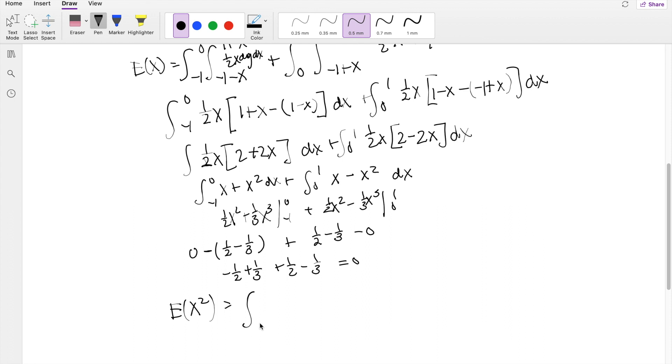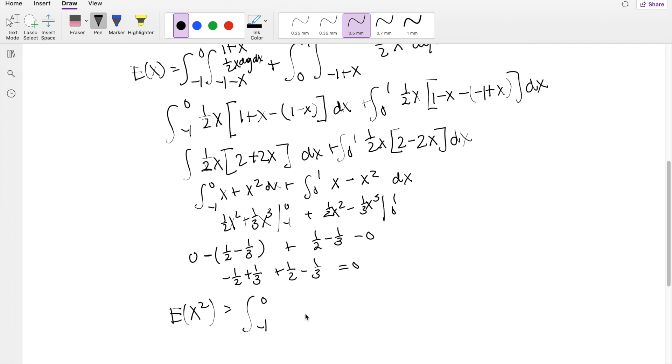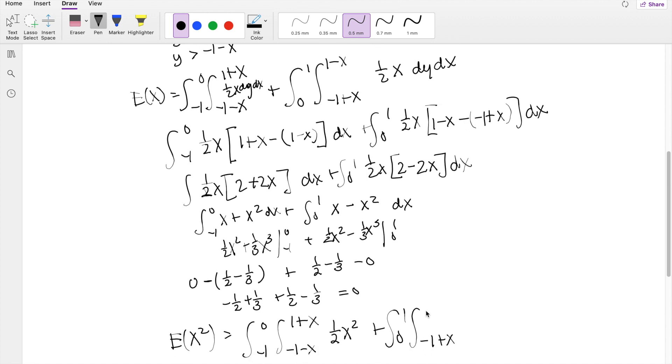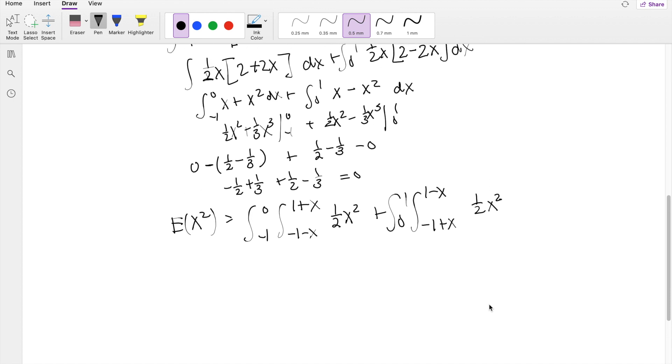So x squared, it's still the same limits of integration, going from this, 1 plus x, negative 1 minus x. But instead of 1 half x, you're going to integrate 1 half x squared, plus 0 to 1, same limit, 1 plus x, 1 minus x, 1 half x squared. And you're integrating in terms of dy first, so you're left with negative 1 to 0, 1 half x squared.